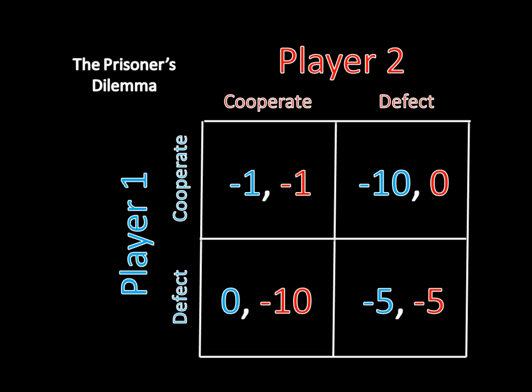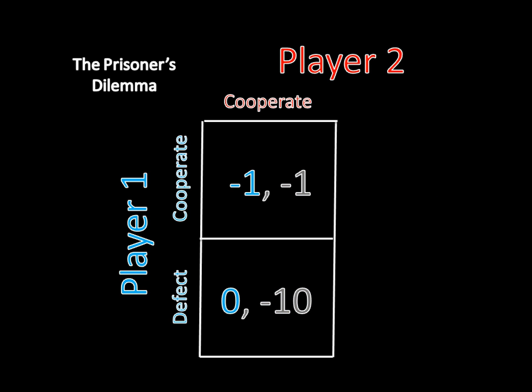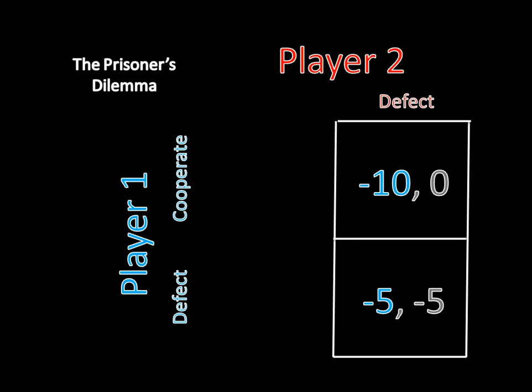If you recall back to last time, I said that players will never use a strictly dominated strategy in equilibrium. We defined a strictly dominated strategy as a strategy that pays less regardless of what the other player does. Here in the prisoner's dilemma, defect dominates cooperate. We can see this because it is better to defect than it is to cooperate if your opponent cooperates, and it is also better to defect than it is to cooperate if your opponent defects.